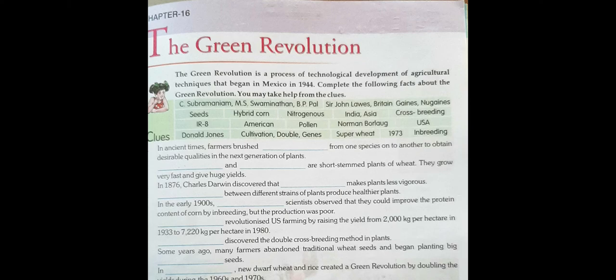So it began in Mexico in 1944. So there are some facts about the Green Revolution. We will read the questions one by one and then fill the appropriate suitable answer in the blank provided. So the very first question: in ancient times, farmers brushed from one species to another to obtain desirable qualities in the next generation of plants.